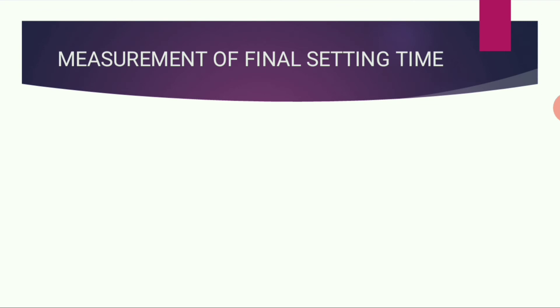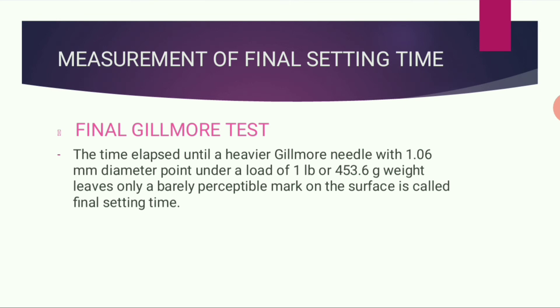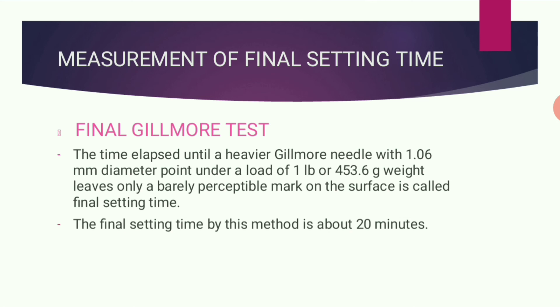How do we measure the final setting time? Using the final Gilmore test: the time elapsed until a heavier Gilmore needle with a 1.06 mm diameter point under a load of 1 pound (453.6 grams) leaves only a barely perceptible mark on the surface is called the final setting time. The needle diameter is 1.06 mm and the load is 1 pound. The final setting time by this method is about 20 minutes.